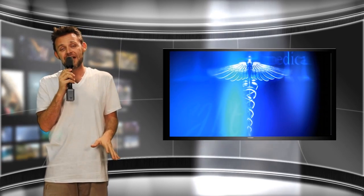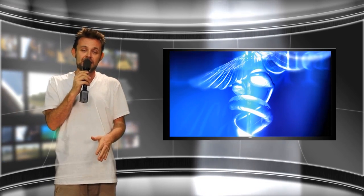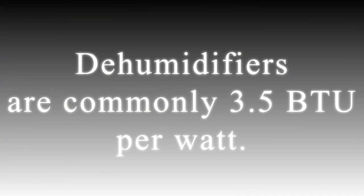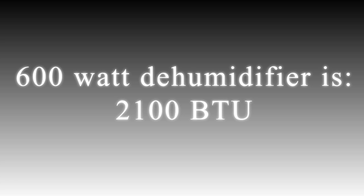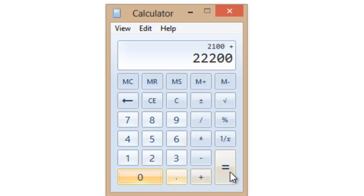The next thing we need to look at is our dehumidifier. This dehumidifier is 600 watts, and dehumidifiers are gauged much the same way as lighting except on the lower side of that threshold. Dehumidifiers are commonly about 3.5 BTU per watt, meaning this 600-watt dehumidifier will be 2,100 BTU. Adding that to our existing subtotal of 22,200 BTU puts us at 24,300 BTU.